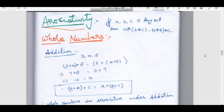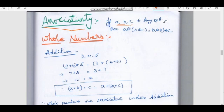Let's talk about the first video in Vijayabharati Champions channel. Let's talk about three numbers — A, B, C. Three numbers belonging to any set.